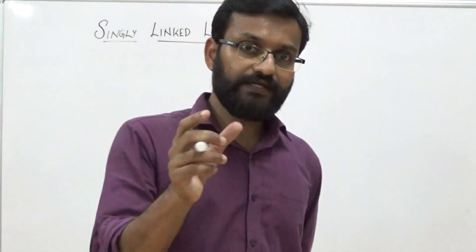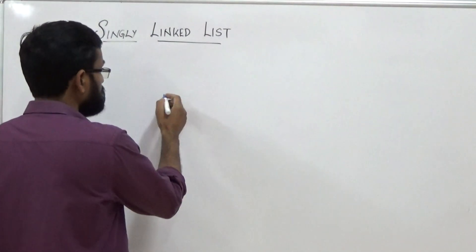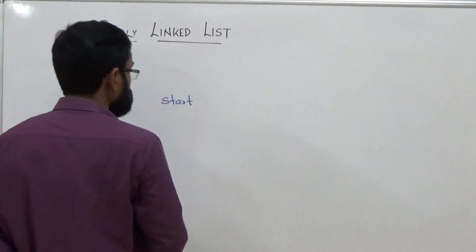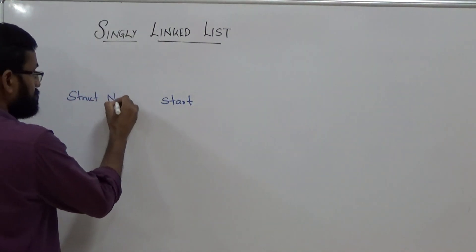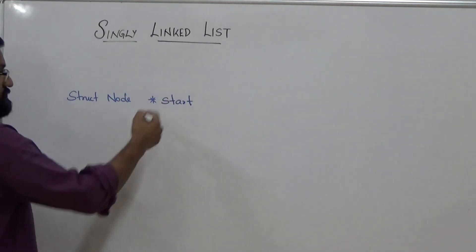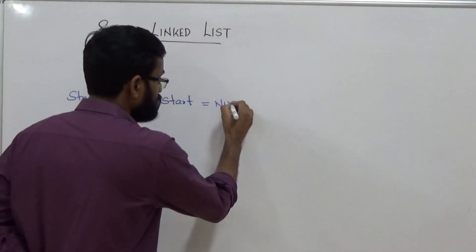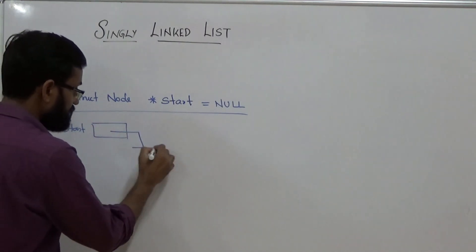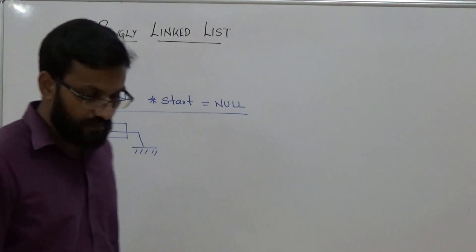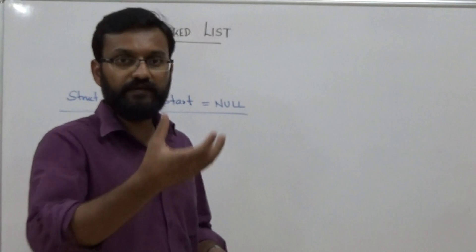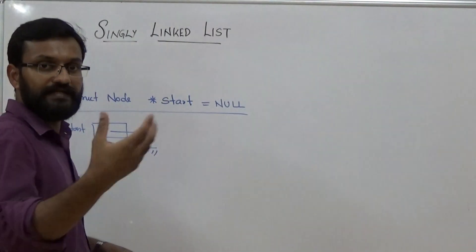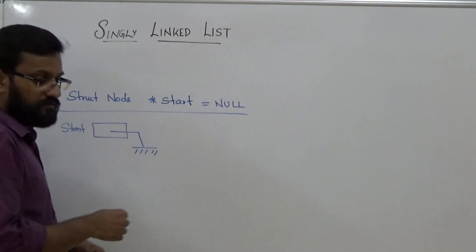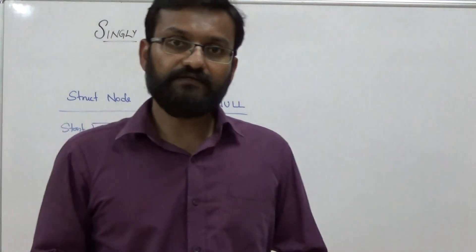We have considered different operations on the linked list. To create an empty list, you create a pointer 'start' of type struct node and assign it to null. During the first insertion, you create a new node, take a pointer p, allocate memory, initialize data, and store the address of that node in start. In this way you can build your singly linked list.